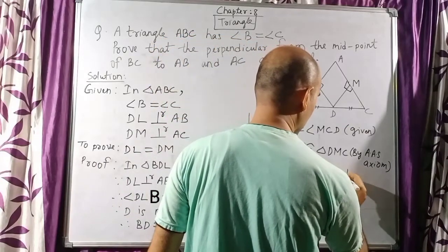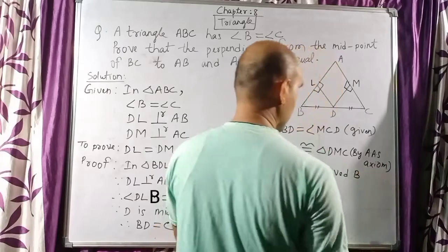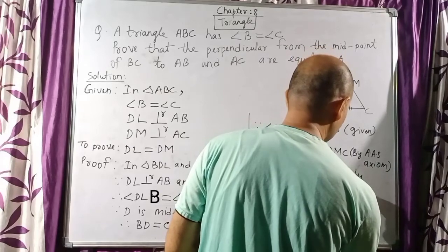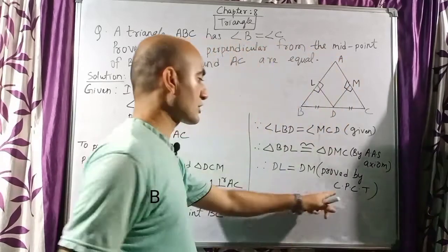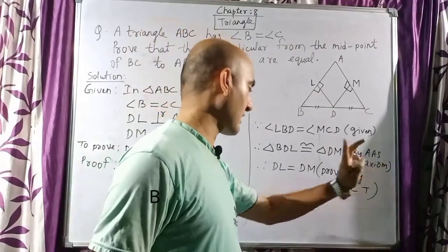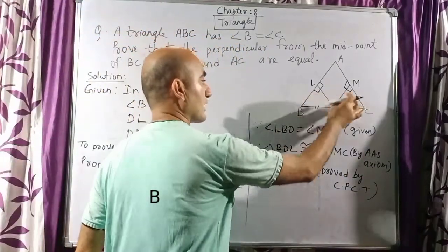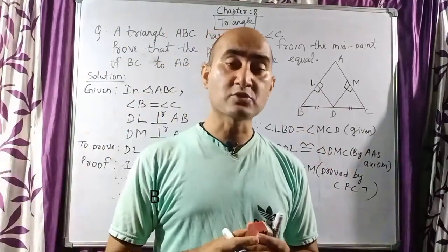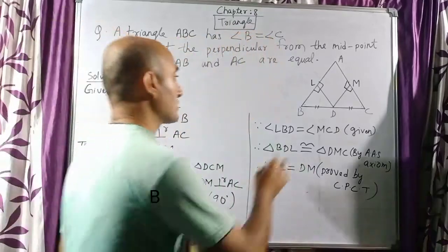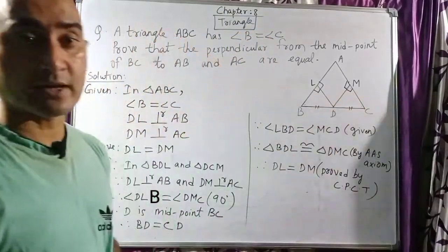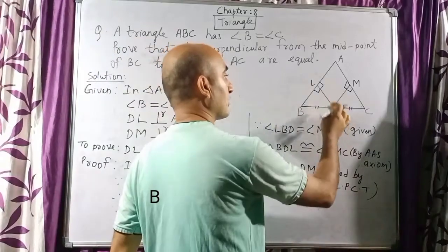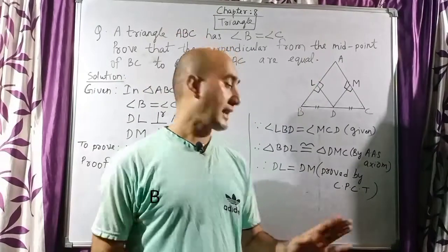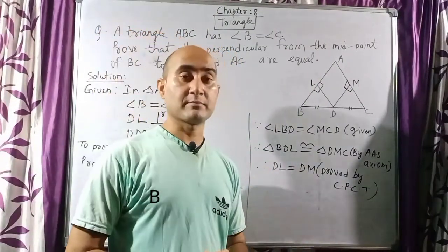This is proved by CPCT — Corresponding Parts of Congruent Triangles. When two triangles are congruent, the remaining angles and sides are automatically equal. Since we proved triangle BDL is congruent to triangle DCM, the remaining part DL is equal to DM.